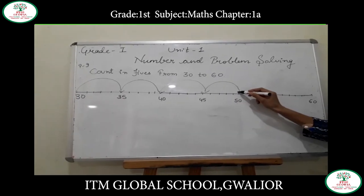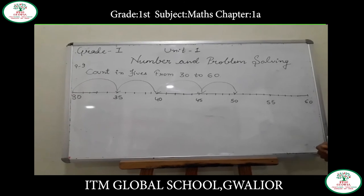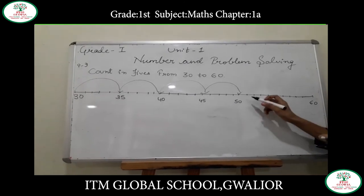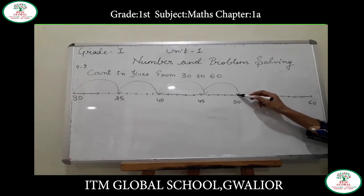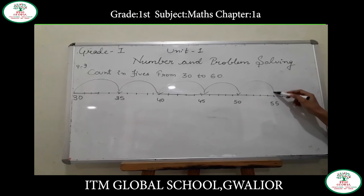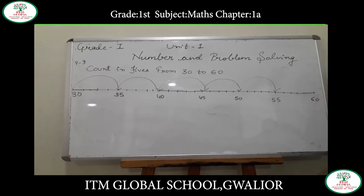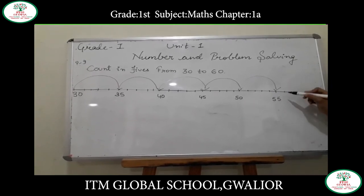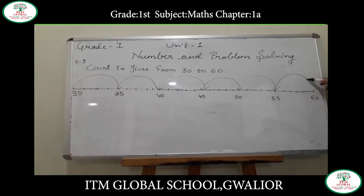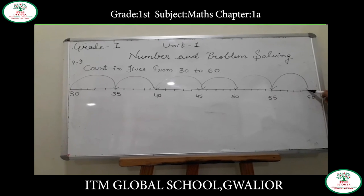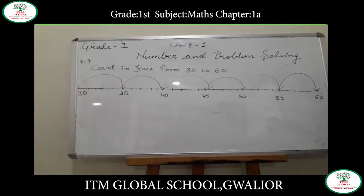So we are counting in fives: skip 4 numbers and come to the 5th one. Again from 50, we do the same and come to 55, and then to our last number, which is 60.